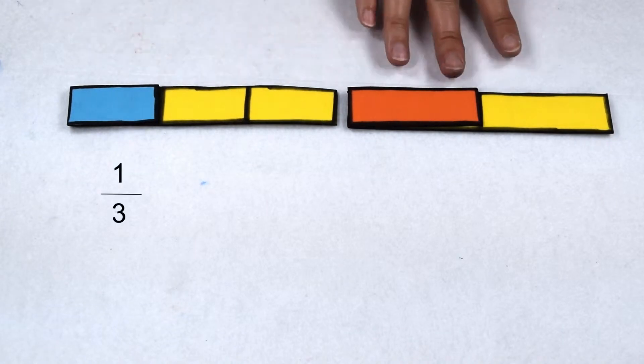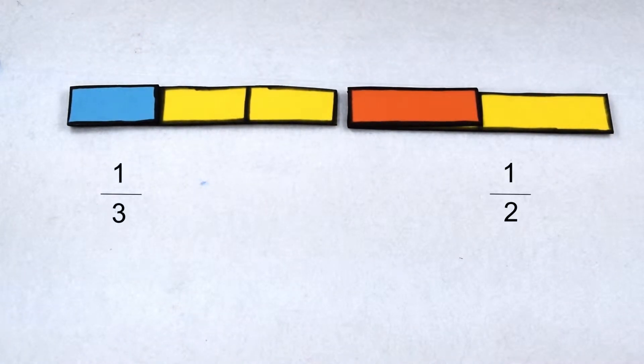Let's start out by comparing one-third to one-half. We can see on our fraction bars that one-third is smaller than one-half, but let's go ahead and find our least common multiple to make sure we're correct.